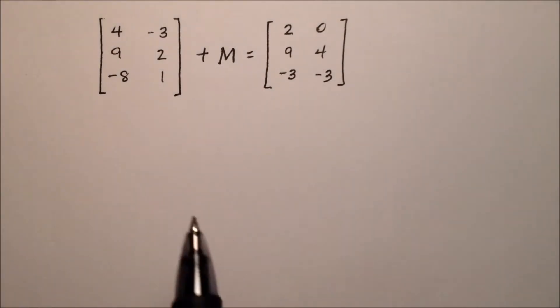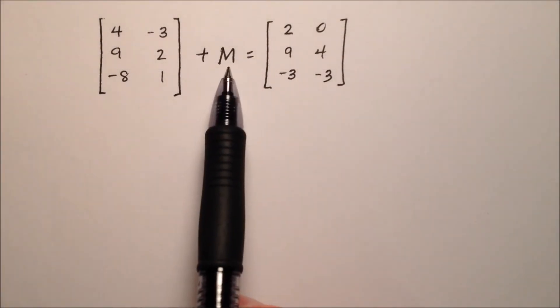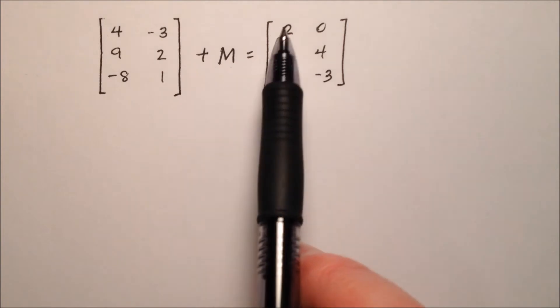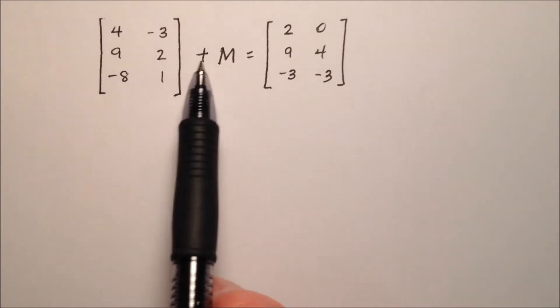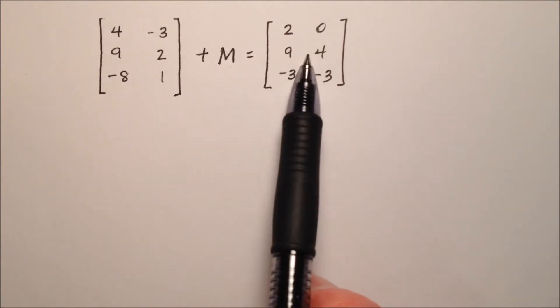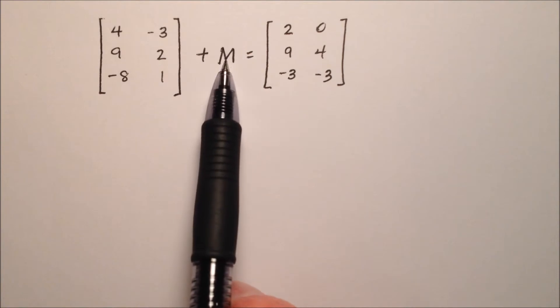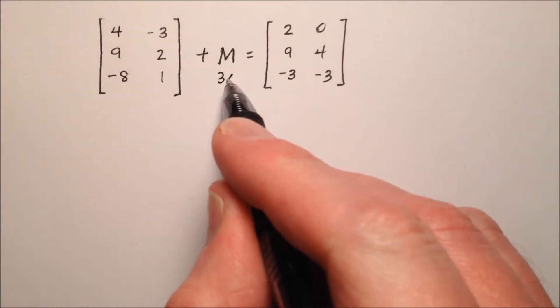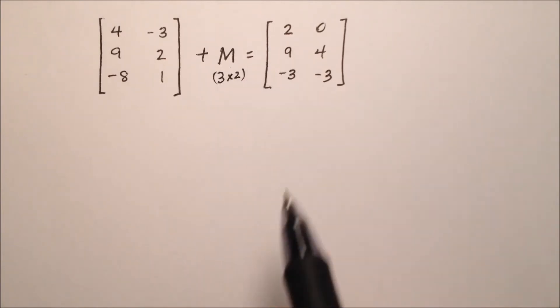Here we're going to solve the equation for the missing matrix, and the matrix here is M. So I'm noticing that this matrix is a 3 by 2, and this matrix is a 3 by 2. So if we're adding two matrices to get this guy, M will also have to be a 3 by 2. So I'm just going to jot that down right there, 3 by 2.